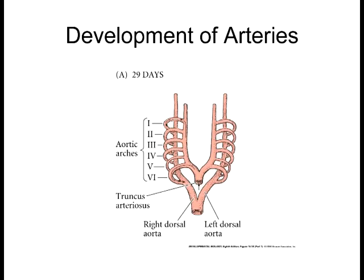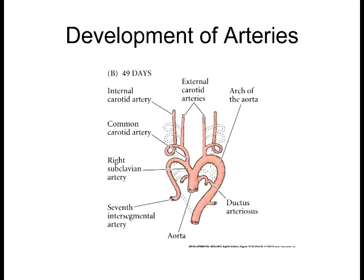Now let's look at how the initial arteries form from the heart. Initially there are just loops — aortic arches — but eventually they start remodeling. What's fascinating is that almost no two people have the exact same remodeling. There's the same fundamental process, but there is some flexibility in how they form. No two people have the exact same pattern in their overall cardiovascular system — it's just a random process of forming these capillaries and veins as the body develops.